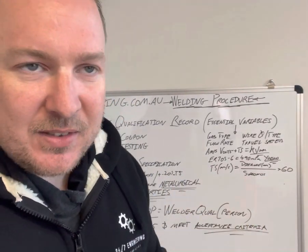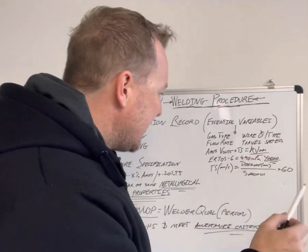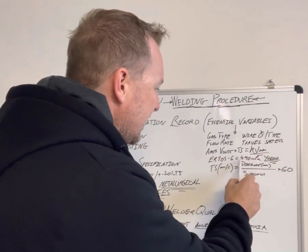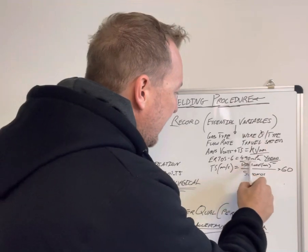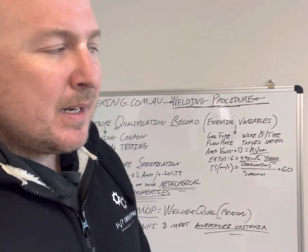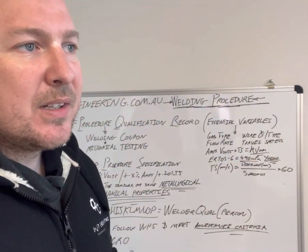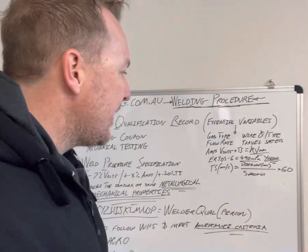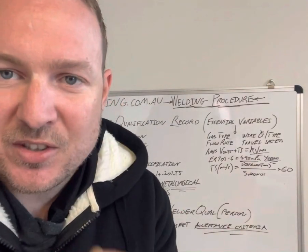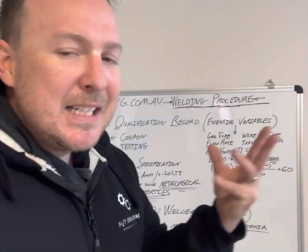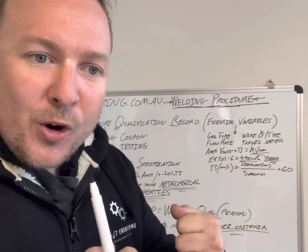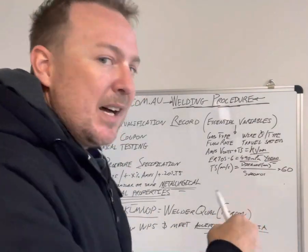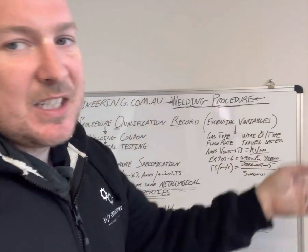The general wire that everyone uses is ER70S-6, which typically has a yield of 490 MPa. Most people are running around welding 350 and 250 grade steel — that's your general grade steel, and that's yield strength, not tensile. Yield is before deformation occurs, and after that happens you go into tensile — we'll talk about that later.